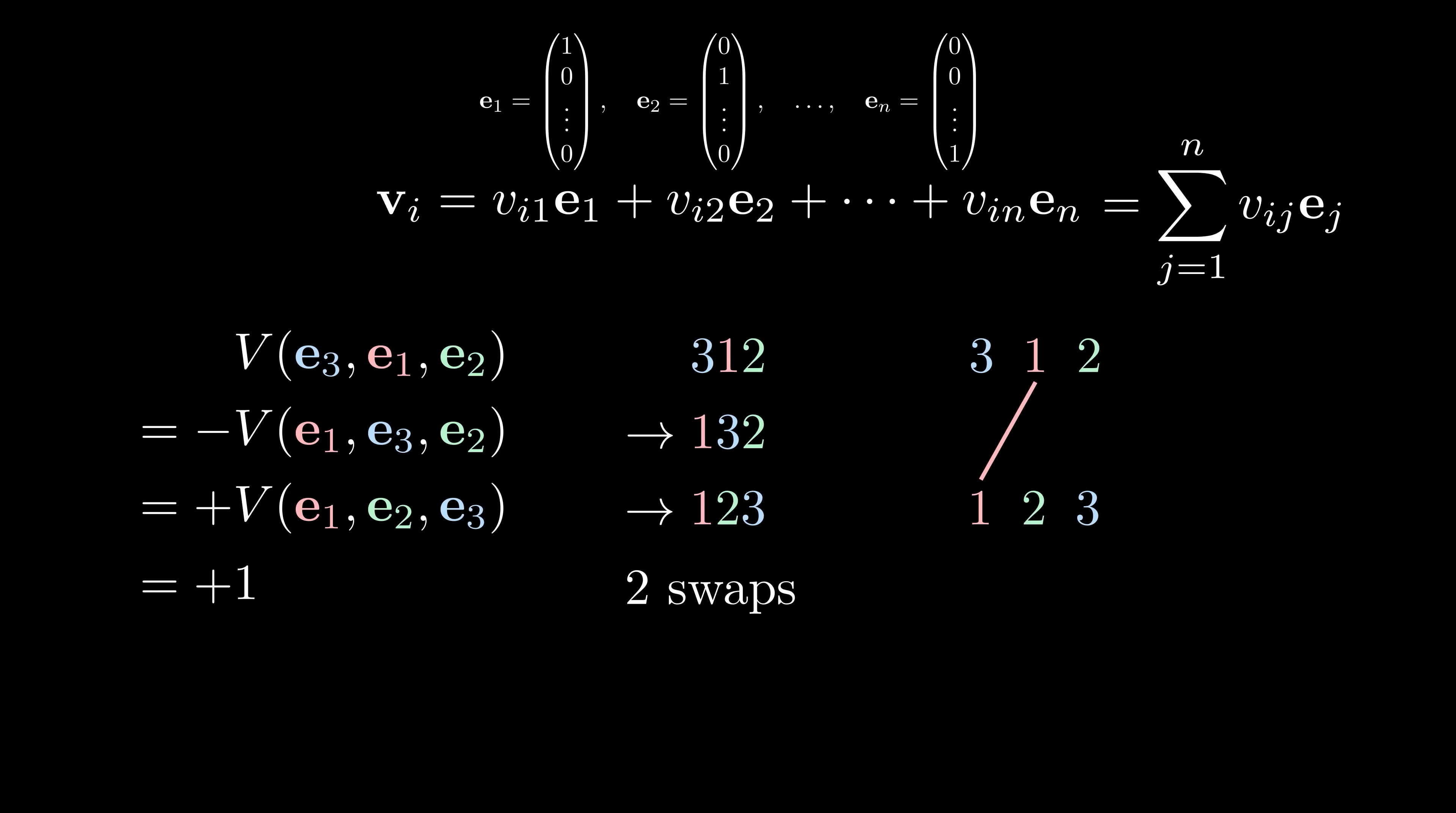This is called a braid diagram. Imagine a horizontal line that sweeps down from the top. Each time it passes a crossing, it tells you what numbers to swap. So here 1 and 3 cross, and so we swap 1 and 3, then 2 and 3 cross, so we swap 2 and 3.